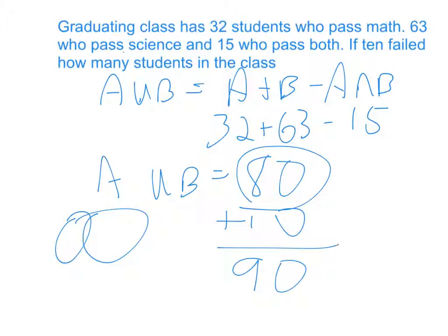If you had seen the Venn diagram, in the middle is the 15 students who took both. Then I would have to take 32 minus 15 to figure out that there were 17 students who just passed math, because the 15 already accounts for some of the 32. And then 63 minus 15 is 48.